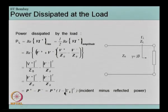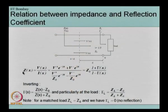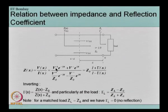For matched lines, gamma_L should be equal to 0. Matching in microwave engineering refers to the condition where all the power reaching the load is delivered to it and no component of the incident power is reflected back. This happens when the reflection coefficient is 0. To find the impedance corresponding to this, we find Z(x) which is given by this equation, and after mathematical manipulation we can get a relation expressing Z(x) in terms of the reflection coefficient.